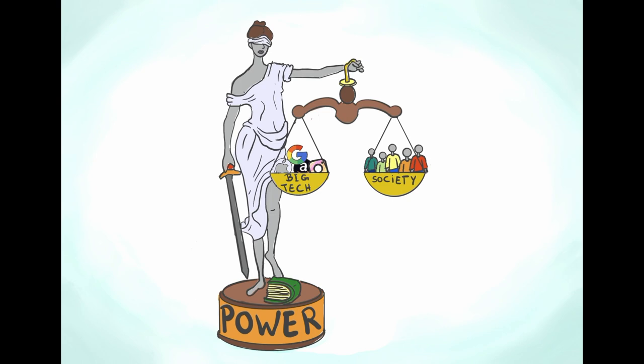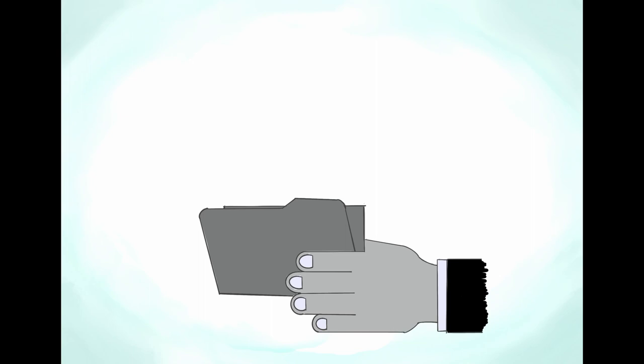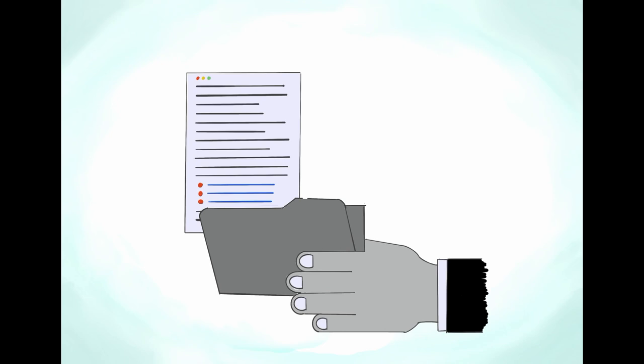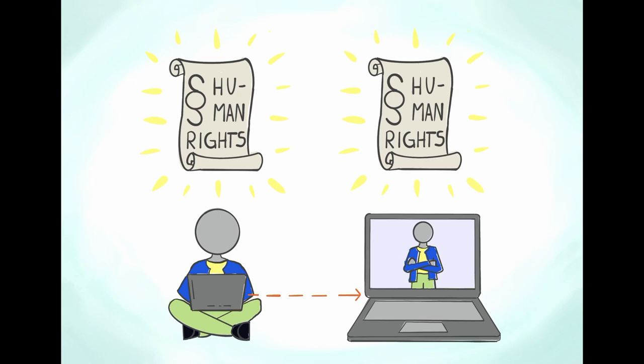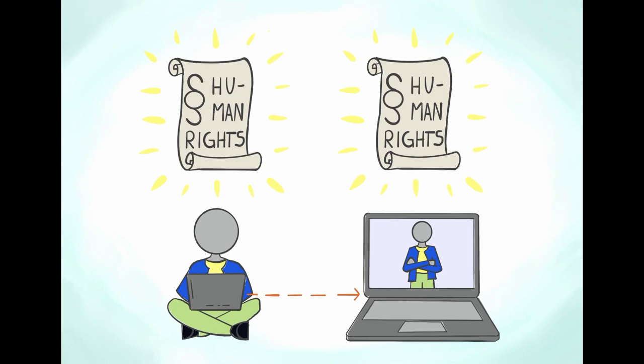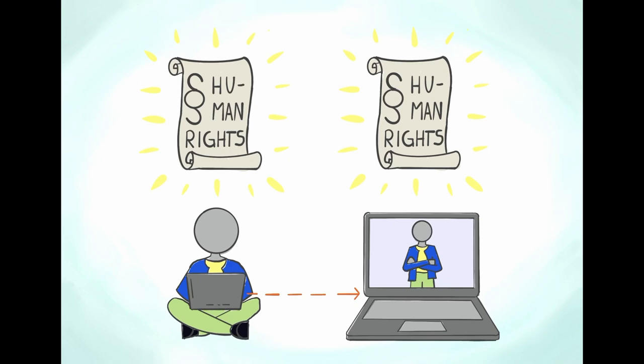So what can we do? One first step would be to regulate the collection of data. Which and how much data should be collected, to whom and how many parties should these data be sold. A step further would be if we start seeing the data of a person as part of the person. Accordingly these data should then be protected with the same rights and laws as the person itself. Thus you should gain back the authority over your data in the internet the same way you have authority over your physical body.